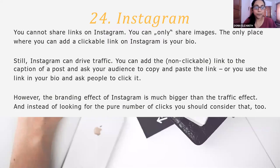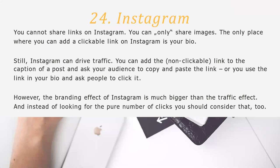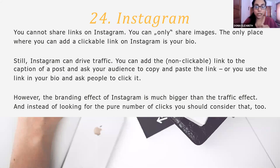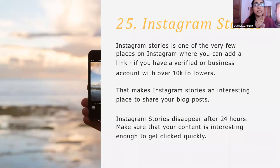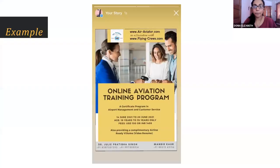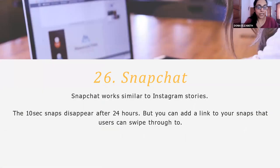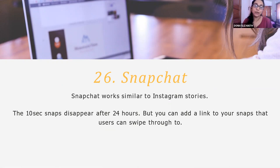Then coming to Instagram. Here you cannot share links on Instagram, but you can share it in your bio. The thing with Instagram is that you can have a branding effect, which also plays an important role in your promotion. Instagram Stories is also a method you can use, but the problem here is you need to have a verified account or a business account with over 10k followers. Then coming to Snapchat — Snapchat also works like Instagram Stories, but the difference is that you can add links here, so you can directly drive traffic to your blog site.